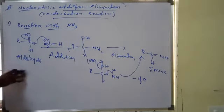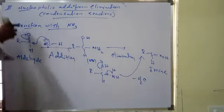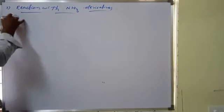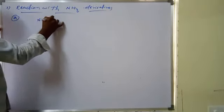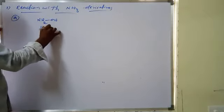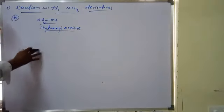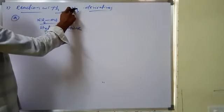Next, reaction with ammonia derivatives. Ammonia derivatives are formed from ammonia. For example, NH2OH — this is called Hydroxylamine. In Hydroxylamine, one of the hydrogens of ammonia is displaced by an OH group. So Hydroxylamine is a derivative of ammonia.